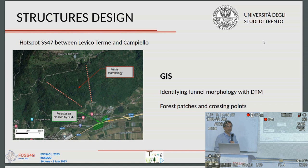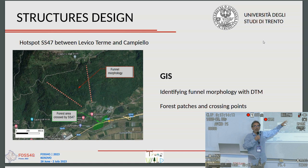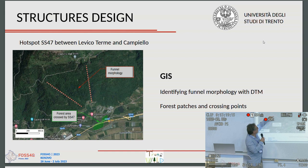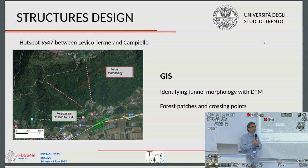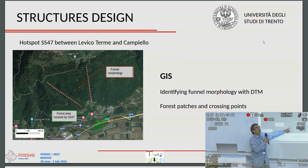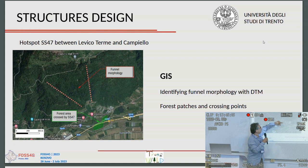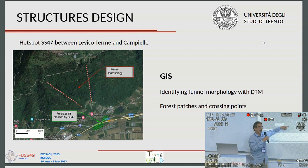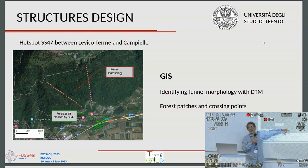I'll focus more on the last case: the hotspot between Levico Terme and Campiello. Here we exploited GIS capabilities more fully — using the DTM, we determined this is a funnel morphology, meaning animals use this area because of the terrain shape. There is a forested area, then an open area with secondary roads, then another forest patch which acts as a magnet drawing animals to cross exactly in this zone, producing the most collisions.